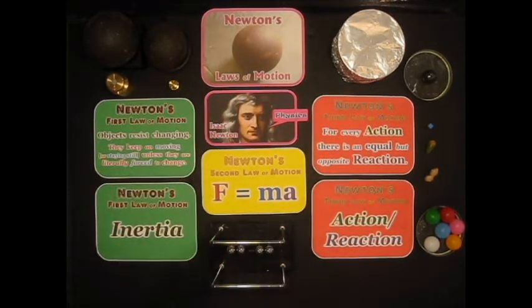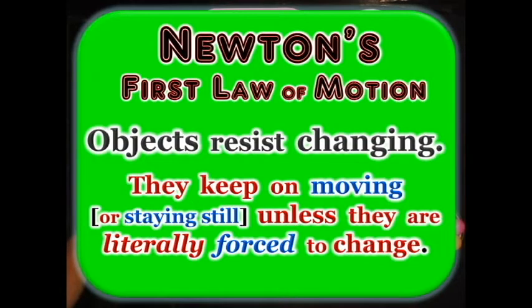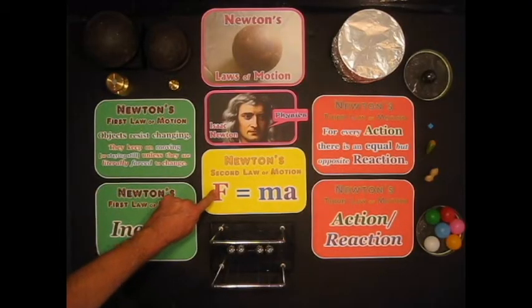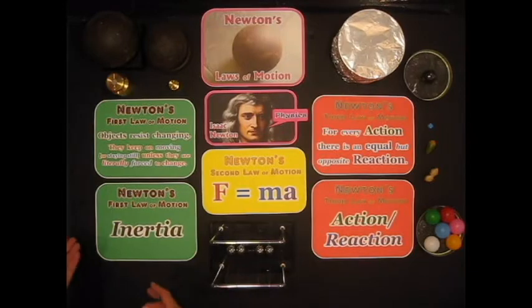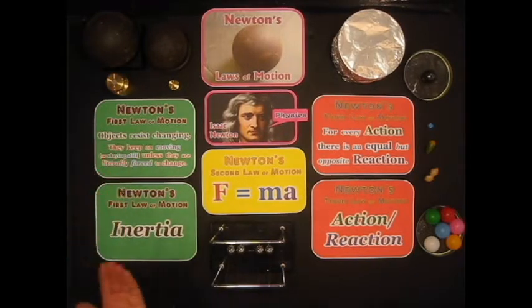One of them, now I've rephrased this in my own words, objects resist changing. I think that's the easiest way to describe it. They keep on moving, or staying still, unless they are literally forced to change. By forced, we mean force. So, a short way of saying that is inertia.